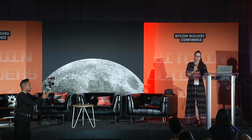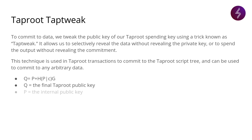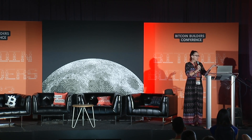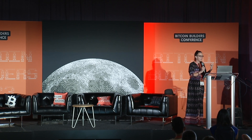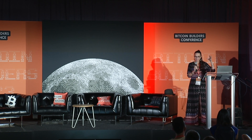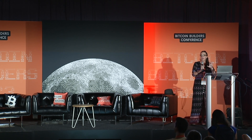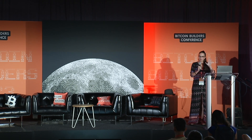There's this cool thing in taproot called tap tweak. This is probably the most boring slide of the presentation — there's just some math. But the idea is that in a taproot transaction, you can take your internal key and some data, do some hashing, and you tweak that key. Then you have this public tweak key that you use for your transactions. This is how you can embed data in a taproot transaction. That's how all these gigantic Merkle trees we're about to discuss actually get committed to on the Bitcoin blockchain.